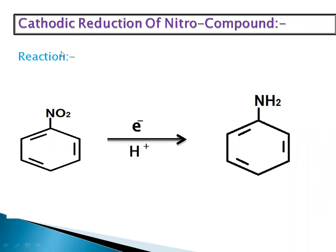Let's move further with cathodic reactions of a nitro compound. We need to know what reduction means — reduction is nothing but removal of an oxygen atom and addition of a hydrogen atom. This reaction is always carried out at a cathode. In galvanic cells, a reduction reaction always takes place at a cathode and an oxidation reaction takes place at an anode. The reactant is nitrobenzene; we are adding H+ and electrons. That NO2 will convert to NH2 — the two oxygen atoms are removed and two hydrogen atoms are added.